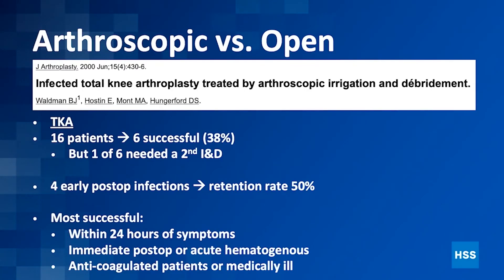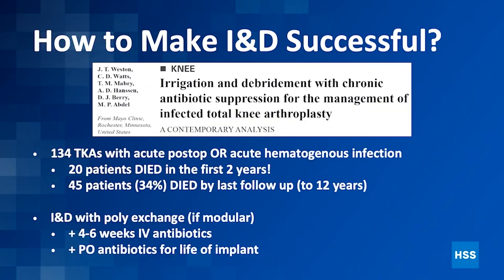Arthroscopic versus open: in the native knee, you can maybe get away with an arthroscopic IND, but in a total knee, this is a pretty bad idea — close to 50-50, maybe even worse, only 38% successful. So don't try to do this arthroscopically. This should be done through open techniques.